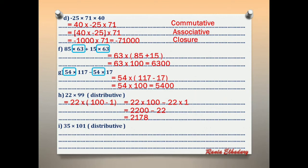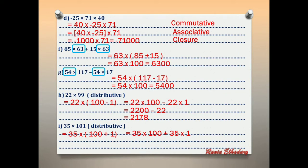Letter I: 35 × 101. Use the distributive property. 101 = 100 + 1. So 35 × (100 + 1) = 35 × 100 + 35 × 1 = 3,500 + 35 = 3,535.